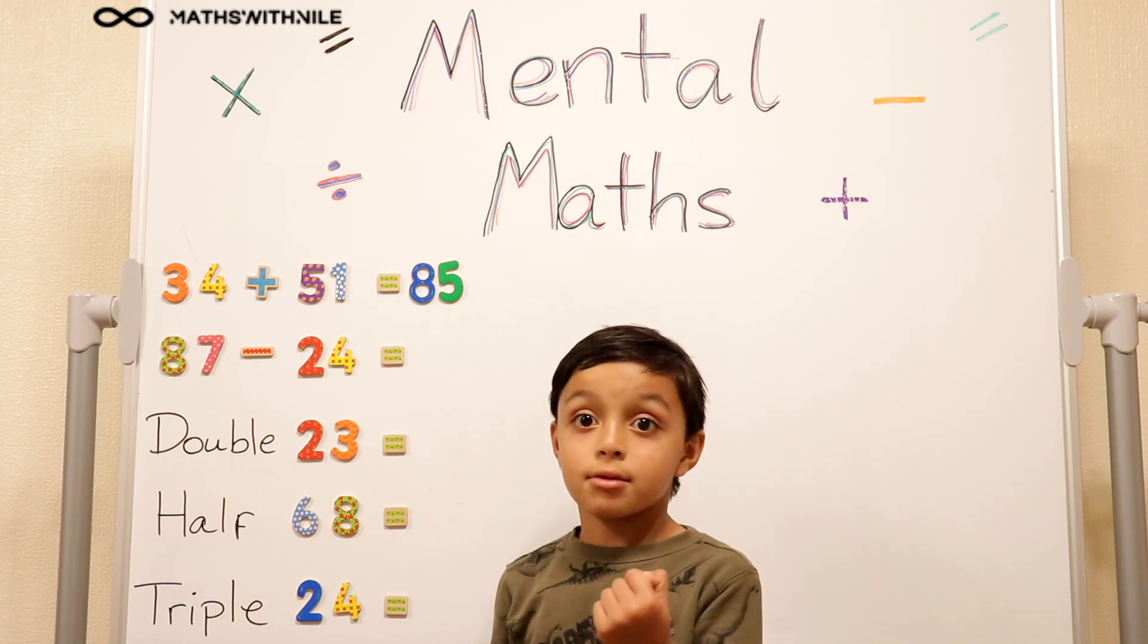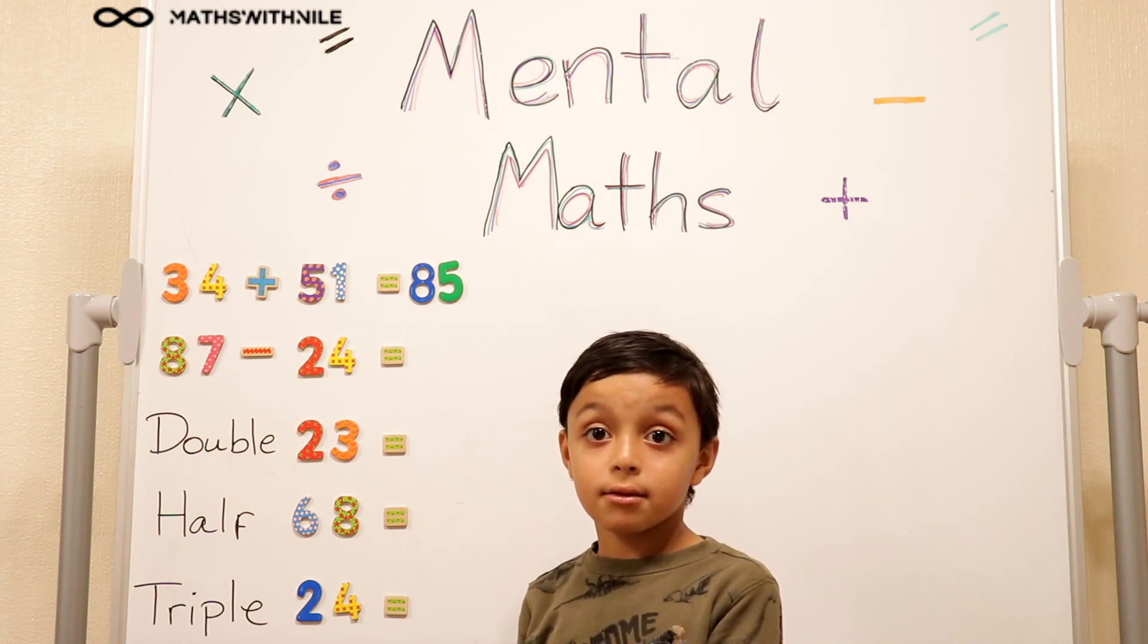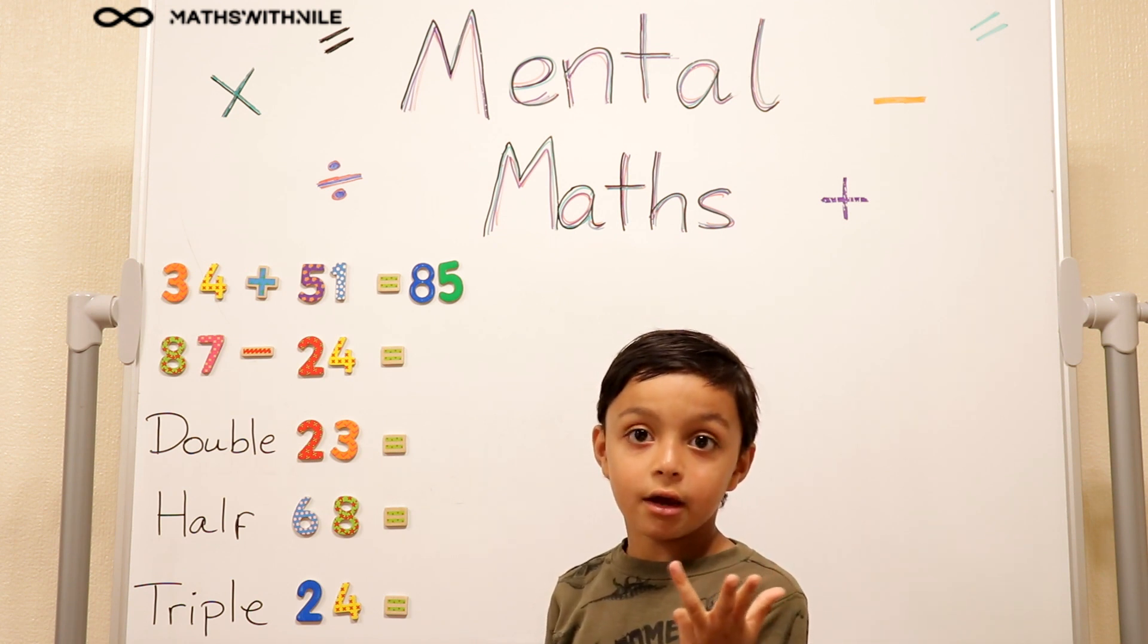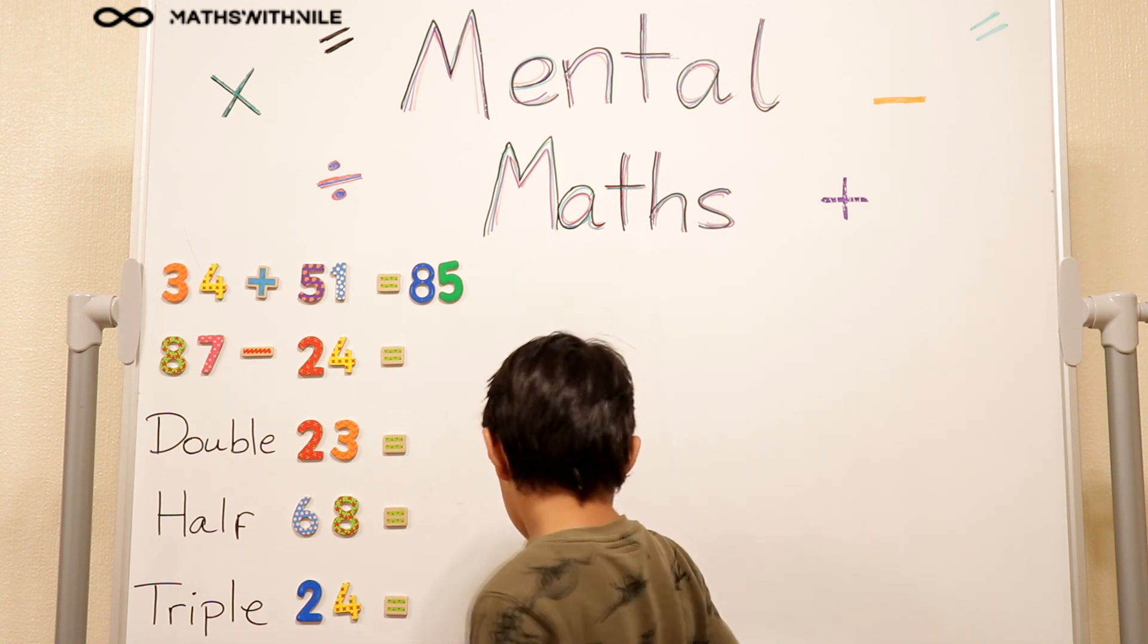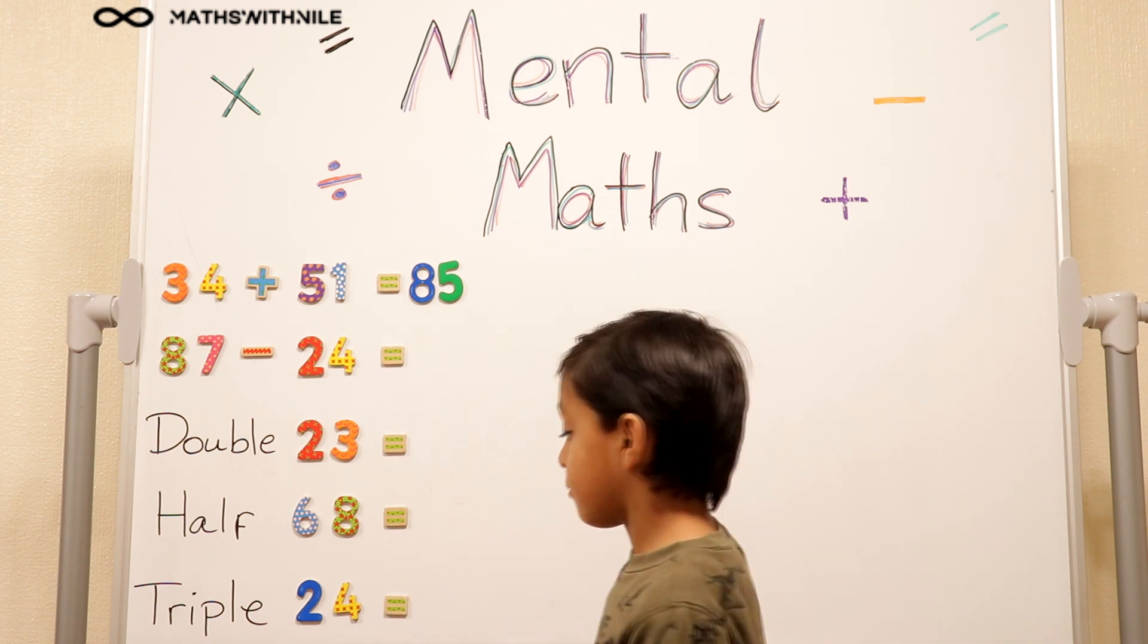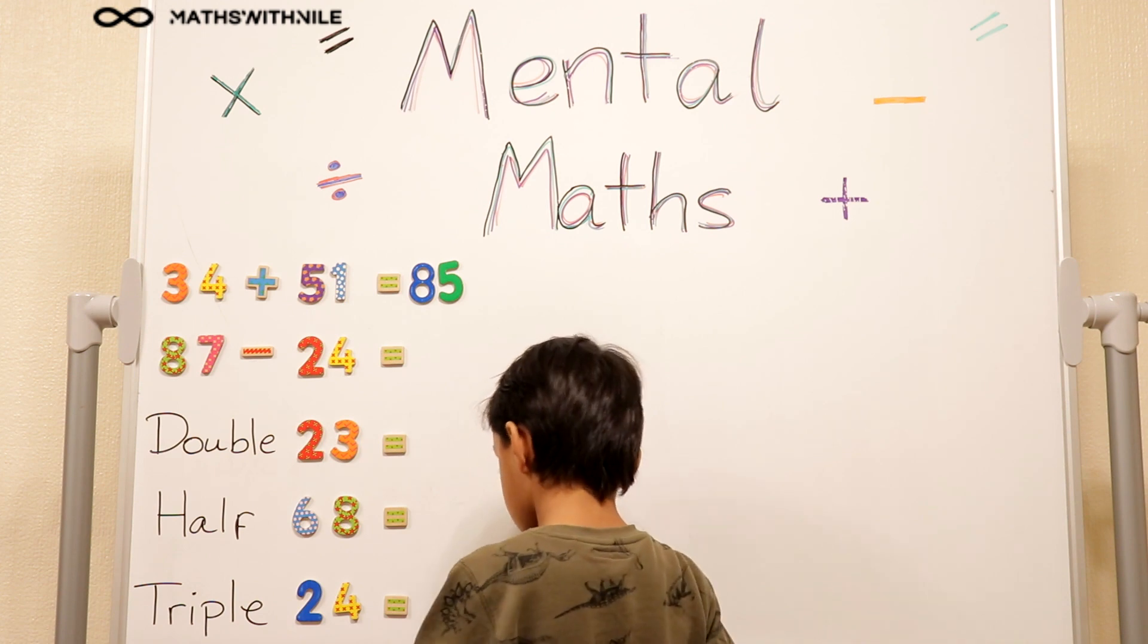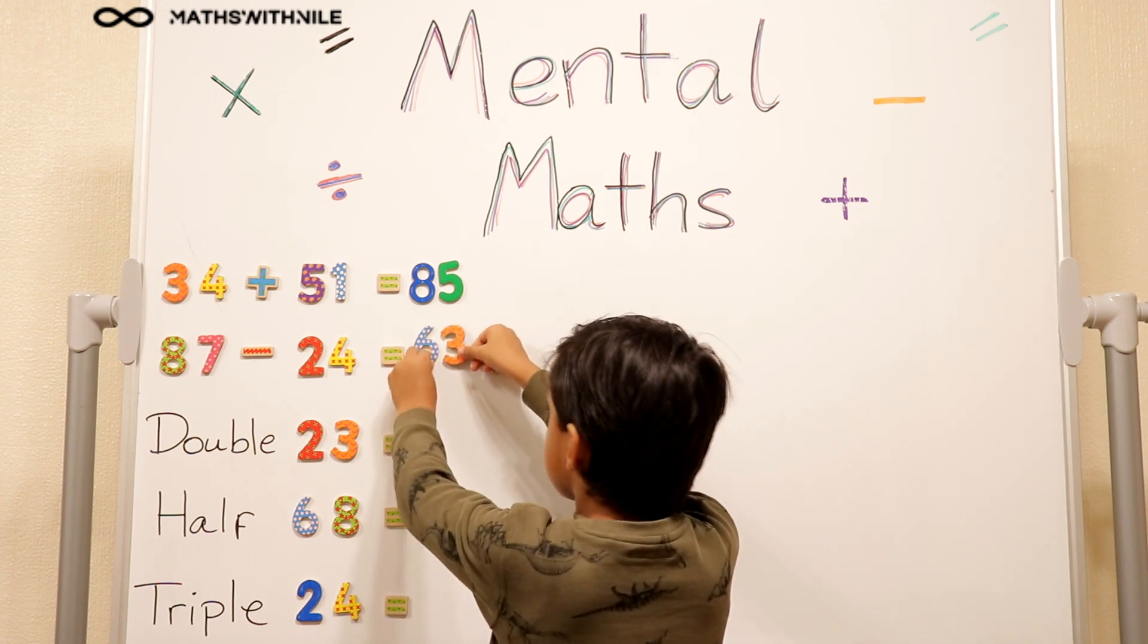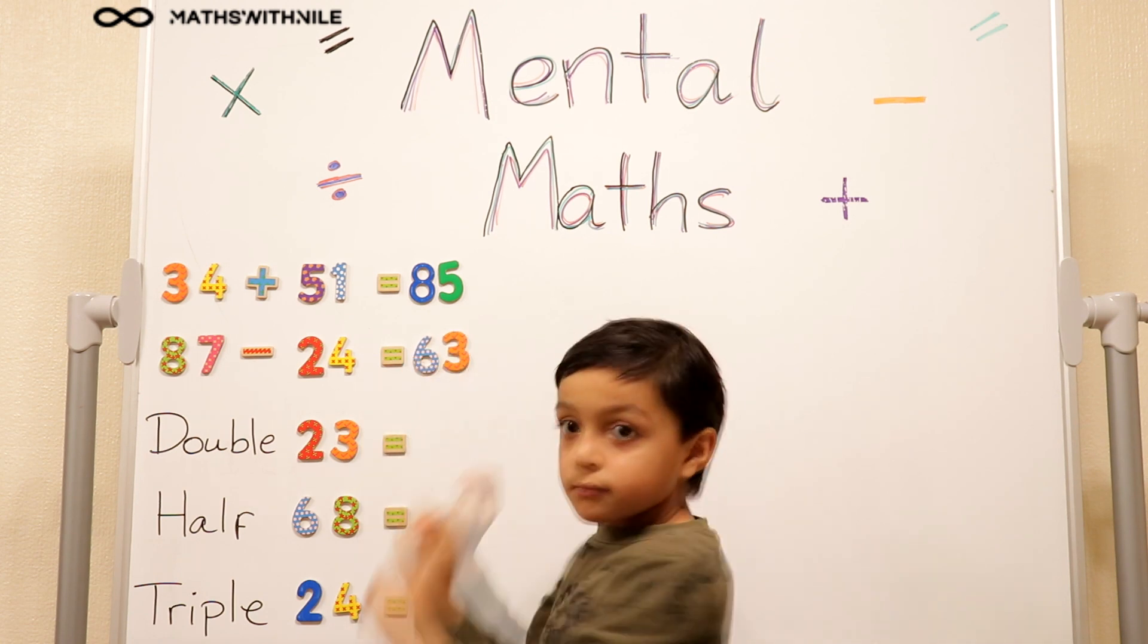So 7, 6, 5, 4, 3. Okay, so it equals 3. So 80 take away 20 is 60, and 7 take away 4 is 3. So the answer is 63. Very good.